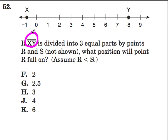They tell us that XY, that's a line (that's why there's lines above here), is divided into three equal parts by points R and S (not shown). What position will point R fall on? Assume that R is less than S.